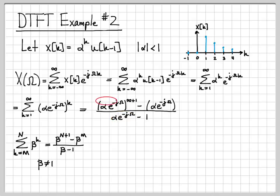This simplifies. Because the magnitude of alpha is less than 1, this quantity actually goes to 0 as it gets exponentiated by large values. So this is just equal to 0 minus alpha e to the minus j omega divided by quantity alpha e to the minus j omega minus 1. And then I'm going to multiply top and bottom by negative 1. I'm going to flip things a little bit. So that's alpha e to the minus j omega divided by 1 minus alpha e to the minus j omega.